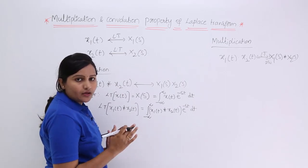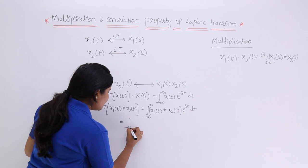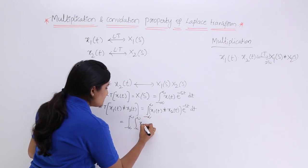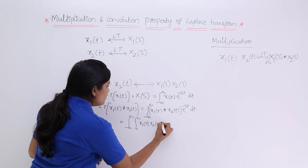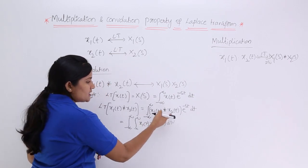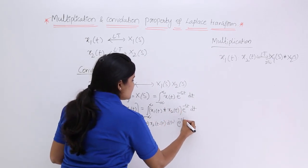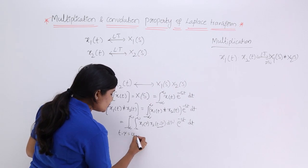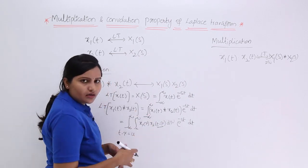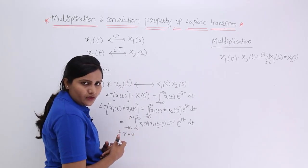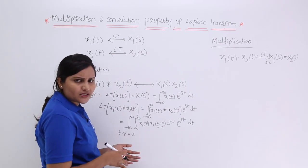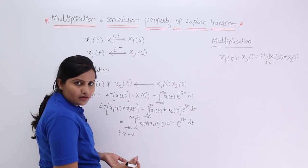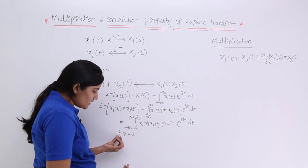We know the convolution formula. Writing that formula: the convolution is the integral from minus infinity to infinity of x1 of tau times x2 of t minus tau d tau. This is the convolution formula. Substituting this in place of the convolution term and keeping the rest as is — e to the power minus st dt — for simplification I am going to let t minus tau equal u. Here tau is a constant delay parameter, so when differentiating, tau contributes zero.